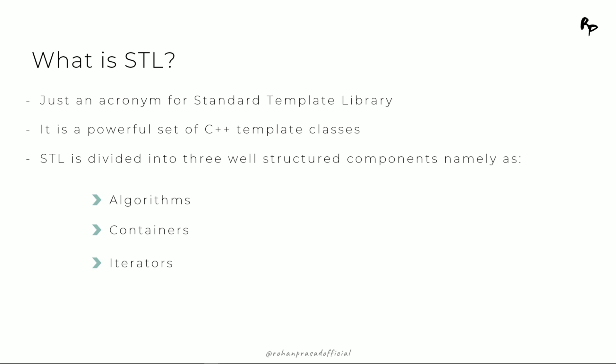C++ STL is divided into three well-structured components: Algorithms, Containers, and Iterators. We will be discussing them one by one.